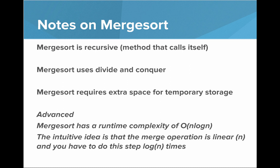The intuitive idea behind this runtime complexity is that the merge operation is linear, which is n, and you have to do this step log n times. The log n is common because we keep dividing that list in half. That's an advanced note beyond this class, but if you're interested you can dive more into that topic.